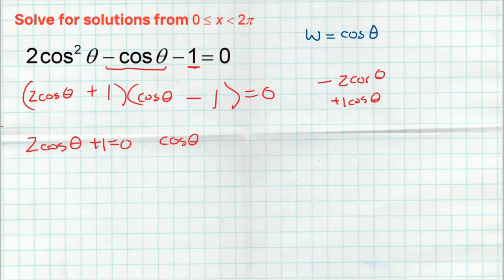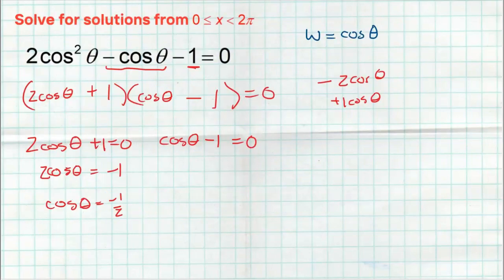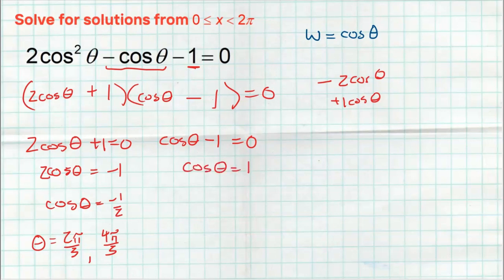Solve each separately. Subtract one: cosine of theta equals negative one half. Looking at the unit circle from zero to two pi, where is cosine equal to negative one half? That happens at two pi over three and four pi over three. The other equation gives cosine of theta equals one, which of course happens at zero. Note that zero and two pi are coterminal — the interval has no equal sign on two pi — so the answer is just zero. Three answers total to this equation.